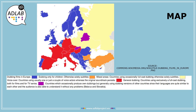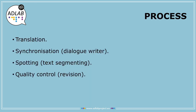Dubbing is the general practice in many countries. The European map that now appears on screen shows countries that only dub for children, such as Scandinavian countries or Portugal, and countries where dubbing is the main transfer mode, such as Spain, Italy, Germany or France.